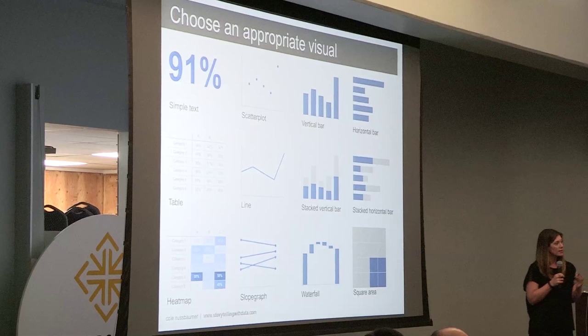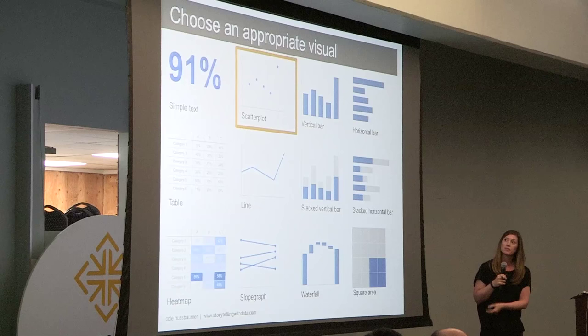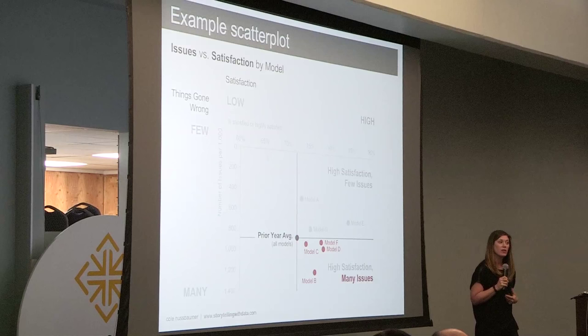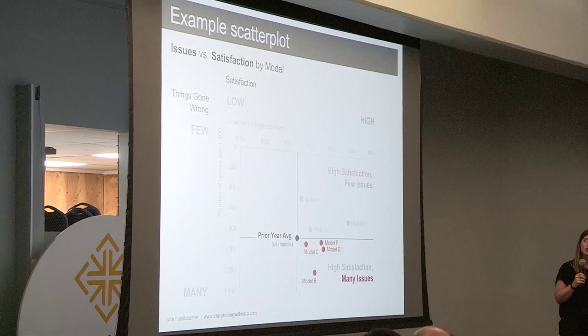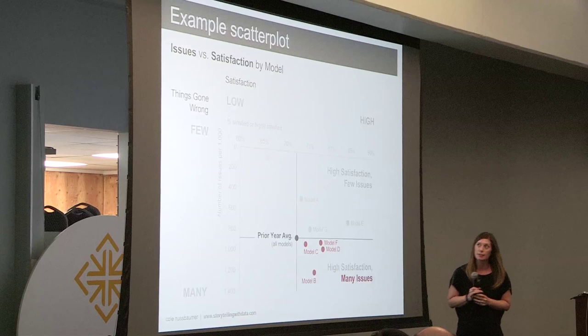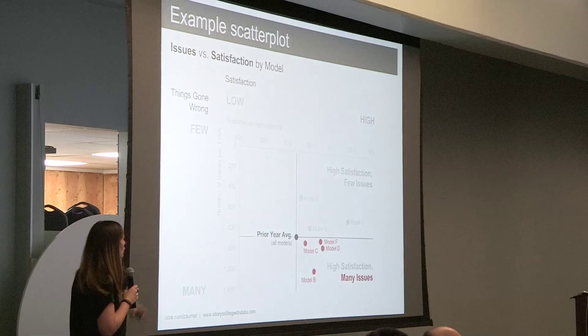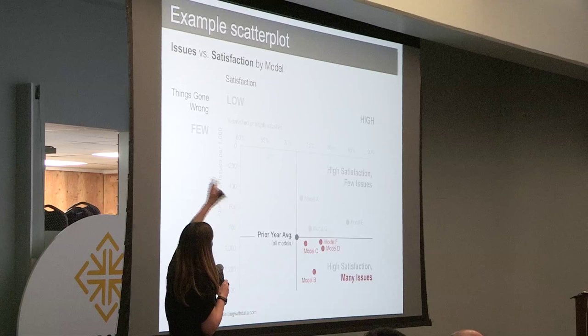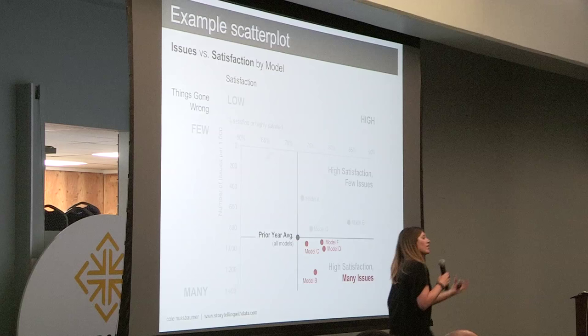The scatter plot is great when you want to encode information simultaneously along a vertical Y and horizontal X axis. For example, if we imagine we're a car manufacturer, we might be interested in issues happening with our current models versus satisfaction — things gone wrong on the Y axis, and satisfaction on the X axis. We can plot our prior year average and understand how this year's models compare. Another common graph is the line graph — lines are often plotting some unit of time, and line graphs should only be used for continuous data.